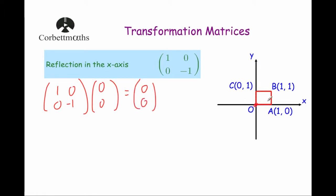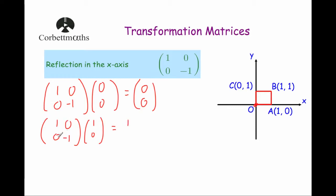Next, the point at A. Again, we're expecting this one to stay where it is. So we're going to multiply the transformation matrix 1, 0, 0, minus 1 by the point at A, so that's 1, 0. When we do that we get: 1 times 1 is 1, 0 times 0 is 0, adding them together is 1. And then the second row by the column: 0 times 1 is 0, minus 1 times 0 is 0, adding them together is 0. So the point at A will stay where it is — point A dash will be there.